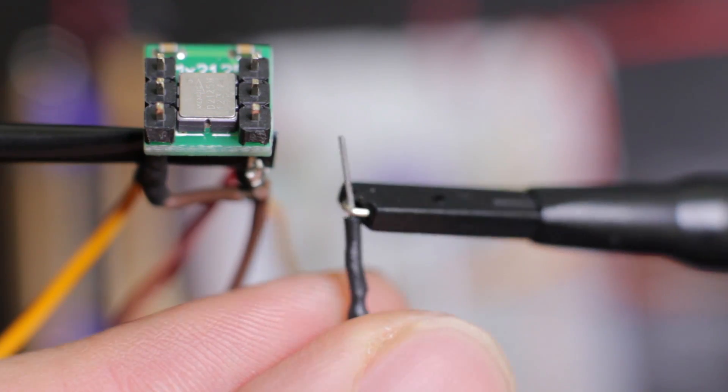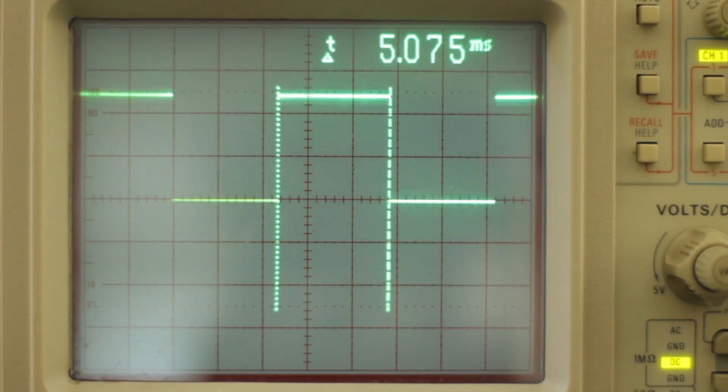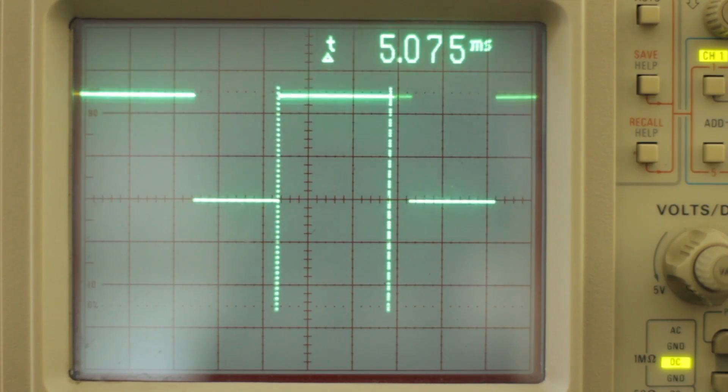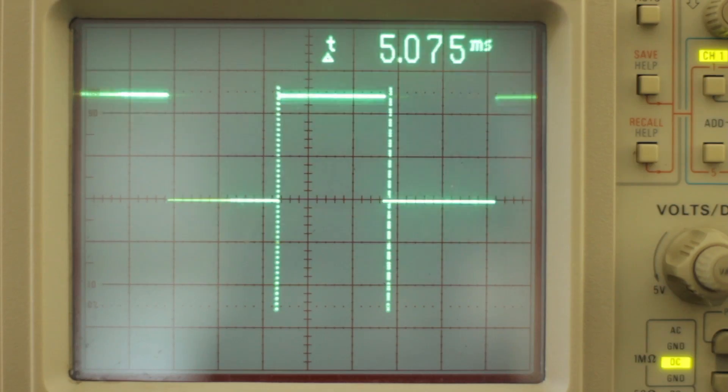We'll also take a look at the output waveform of the accelerometer. Tilting the accelerometer in one direction increases the pulse length, while tilting the accelerometer in the opposite direction will decrease the pulse length.